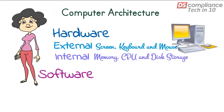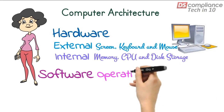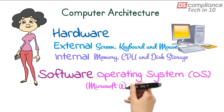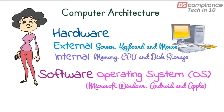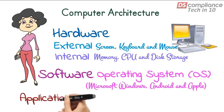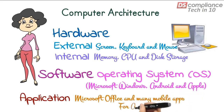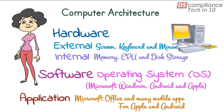The second major component of a computer system is software, which in turn is split into two parts. The operating system, or OS, which in essence drives the computer and tells the hardware what to do. And the second software component is the application, which performs a specific task or tasks — examples being Facebook, YouTube and WhatsApp.